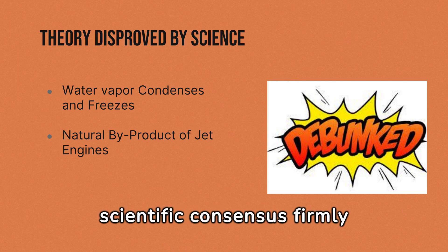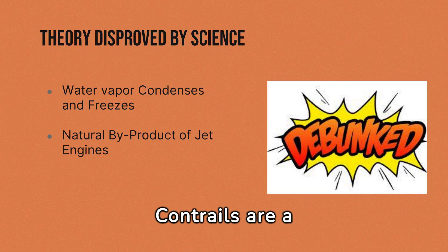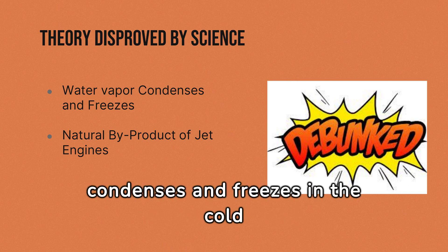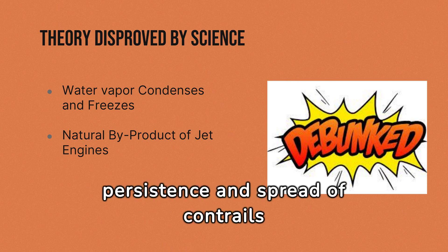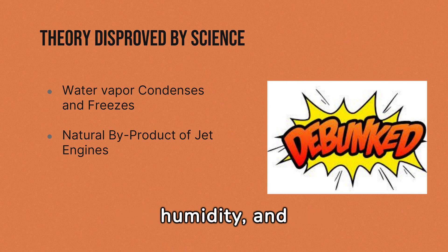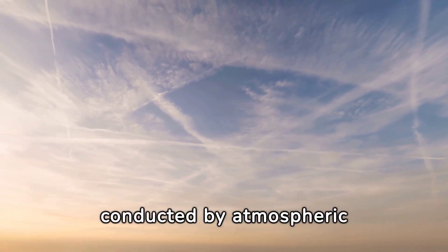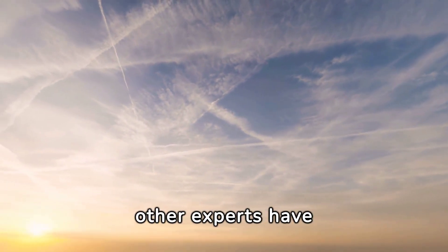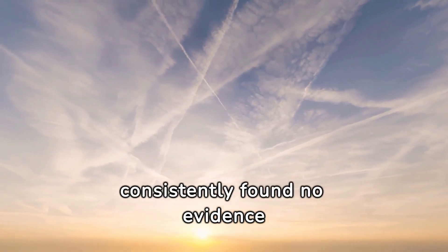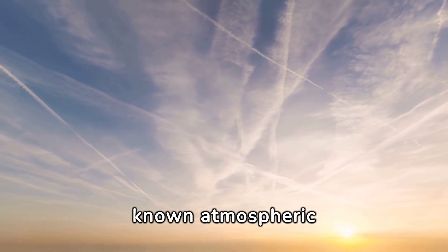However, scientific consensus firmly rejects the claims made by proponents of the conspiracy theory. Contrails are a natural by-product of jet engines, formed when water vapor in the aircraft exhaust condenses and freezes in the cold upper atmosphere. The persistence and spread of contrails depend on various atmospheric conditions, including temperature, humidity and wind patterns, rather than any deliberate spraying of chemicals. Numerous studies conducted by atmospheric scientists, meteorologists and other experts have thoroughly debunked the conspiracy theory, consistently finding no evidence of any widespread spraying program, with the observed phenomena explained by known atmospheric processes.